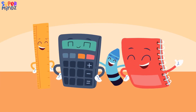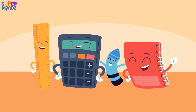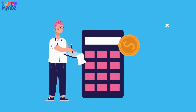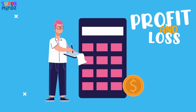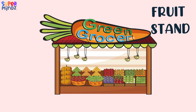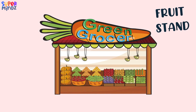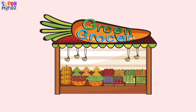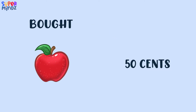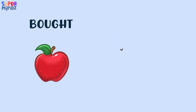Hi kids! Today we're going to explore something super interesting: profit and loss. Imagine you have a fruit stand like this one. You sell an apple for 80 cents. Now let's say you bought the apple for 50 cents.